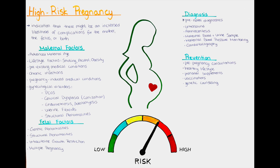Also, many gynecological diseases or disorders lead to a pregnancy being classified as a high-risk pregnancy. This includes the polycystic ovarian syndrome, which is a hormonal disorder about which we have a separate video in our gynecology playlist. It increases the risk of complications such as gestational diabetes, pre-eclampsia, miscarriage, or preterm birth.